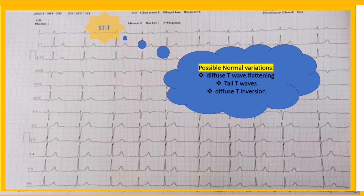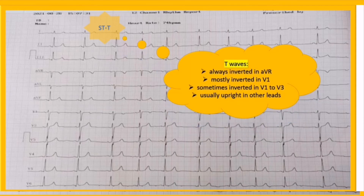In EKGs with absence of depolarization abnormalities — including bundle branch block, WPW, and ventricular hypertrophy — the T wave is always inverted in aVR, mostly inverted in V1, sometimes inverted in V1 to V3, and usually upright in other leads. Here, in aVR and V1 it's inverted; in other precordial and limb leads it's upright. Therefore, there are no abnormal STT changes in our strip.